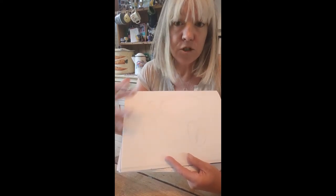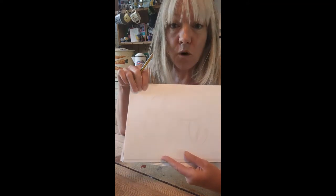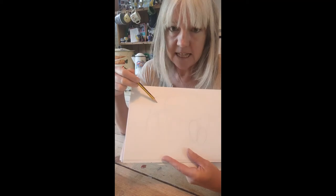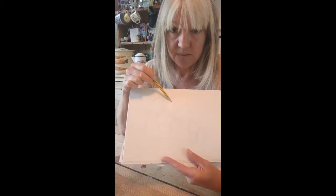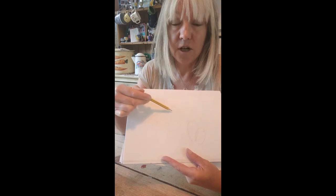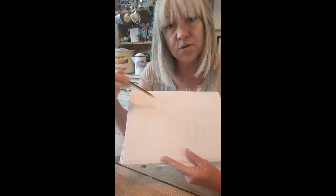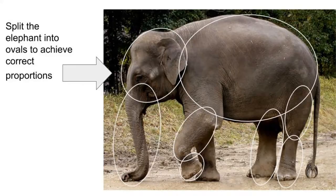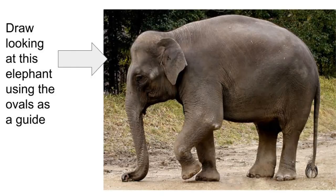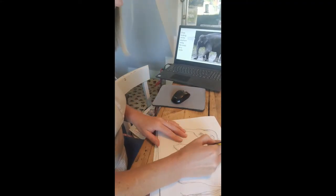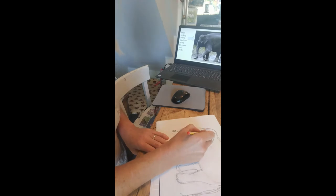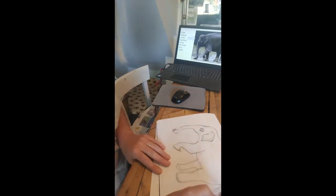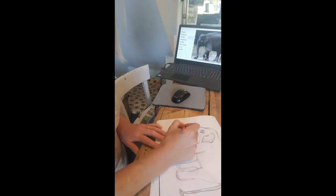What's important — the reason we do this — is so we get the correct proportions. If we get the proportions wrong, that is when drawings don't work. We need the head in correct proportion to the body, and the legs in correct proportion to the body. By doing these ovals, we've planned our proportions.